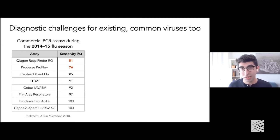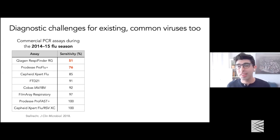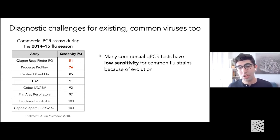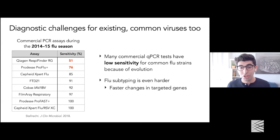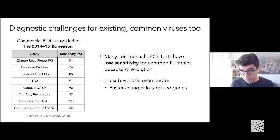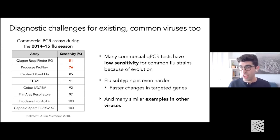There are also difficulties for existing viruses. Flu is a great example — here are eight widely used commercial PCR assays for flu, all FDA approved or European equivalent. Evolution introduces mutations between the genome and the primer or probe sequences — it becomes a game of chance. Many of these tests have rather low sensitivity because they're not doing well detecting some common flu strains, especially H3N2 strains. Flu tests generally target a conserved non-structural gene; to subtype what flu you have (H1, H3, H5), the problem becomes even harder.